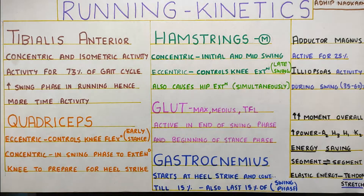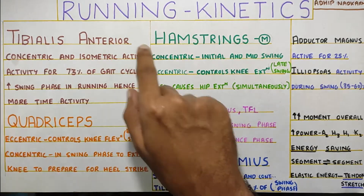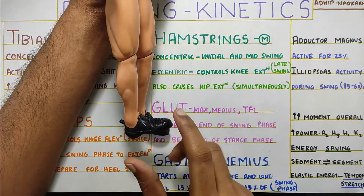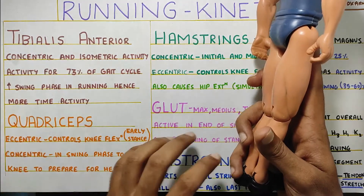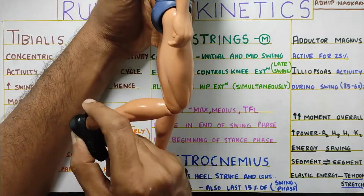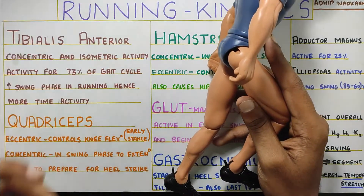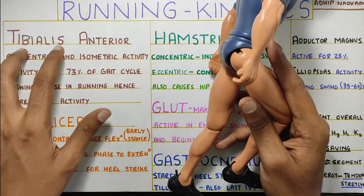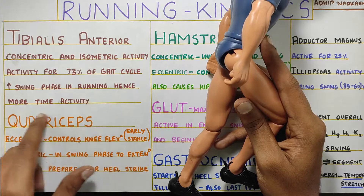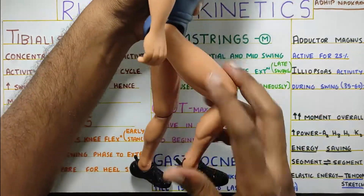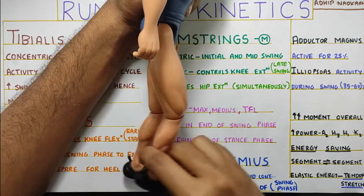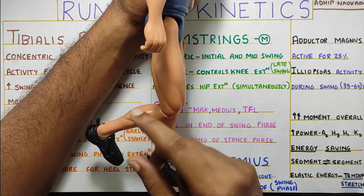Next, going on to the tibialis anterior. There will be concentric and isometric activity of tibialis anterior. Concentric activity works against gravity to create dorsiflexion, and isometric activity maintains the dorsiflexion. This activity will happen for about 73% of the gait cycle — that's a lot. Why? Because the swing phase in running gait is much more than the swing phase in walking. So compared to walking, the tibialis anterior activity in running is more — more time this activity is seen — because your swing phase is more. In the swing phase you need to clear your foot off the ground, so you need dorsiflexion. If plantar flexion is present, it can drag onto the ground.